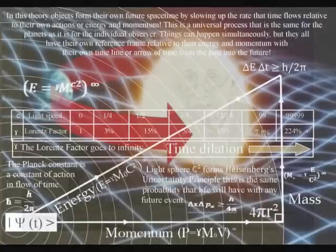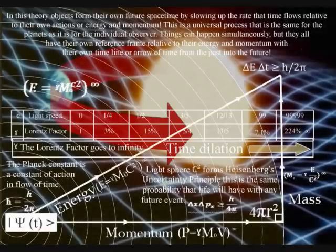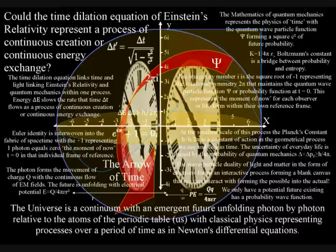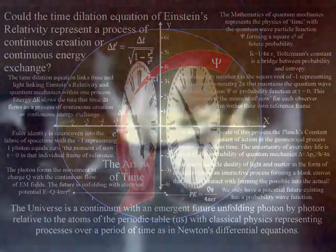Energy and momentum of an object slows the rate that time flows, forming time dilation and the curvature of space-time. This dynamic and interactive geometrical process must have existed before the evolution of life. Therefore, the evolution of life within the universe must have been based on the momentum and dynamic geometry of this universal process.